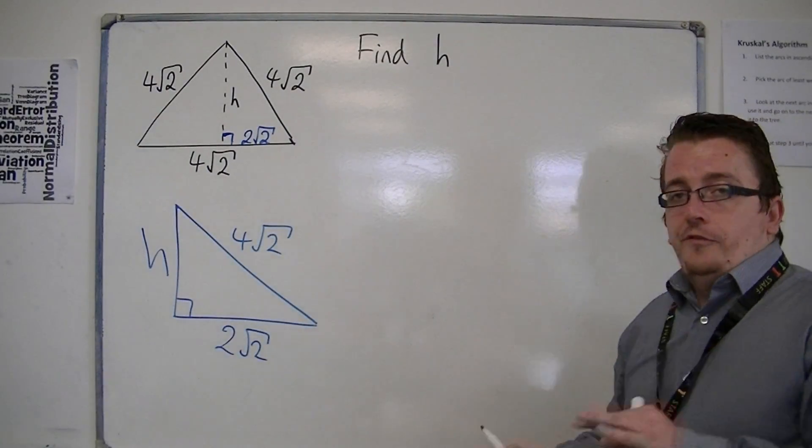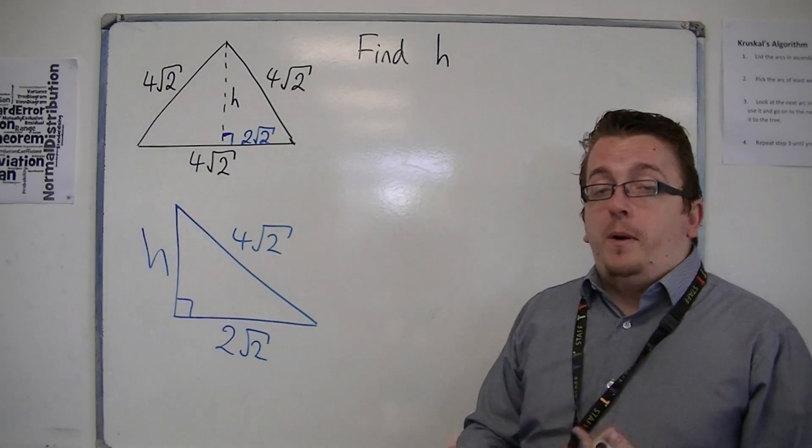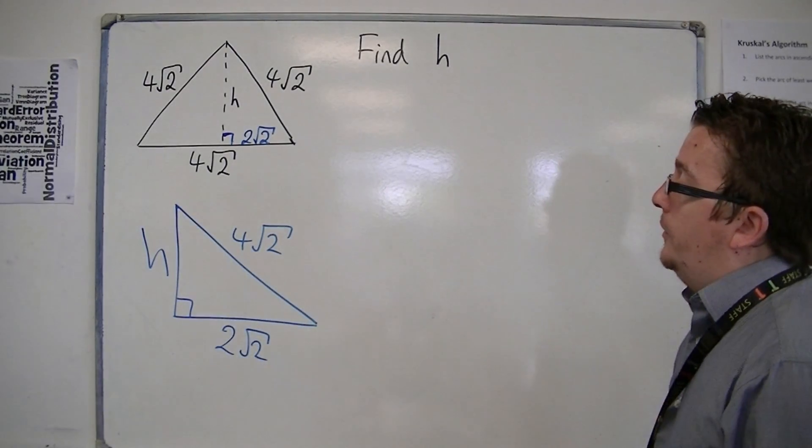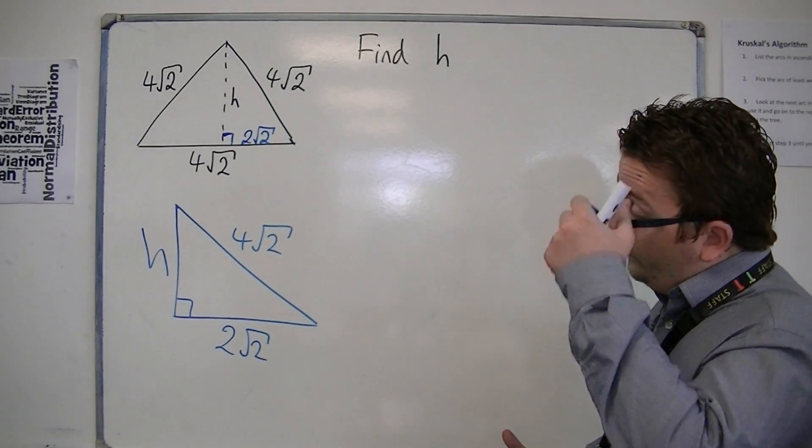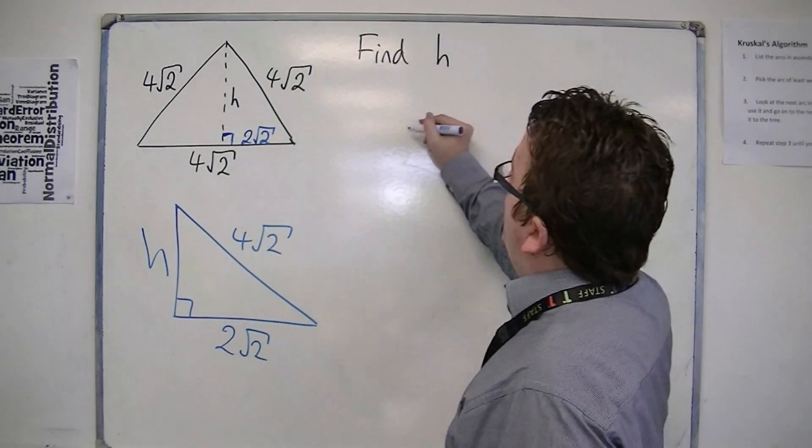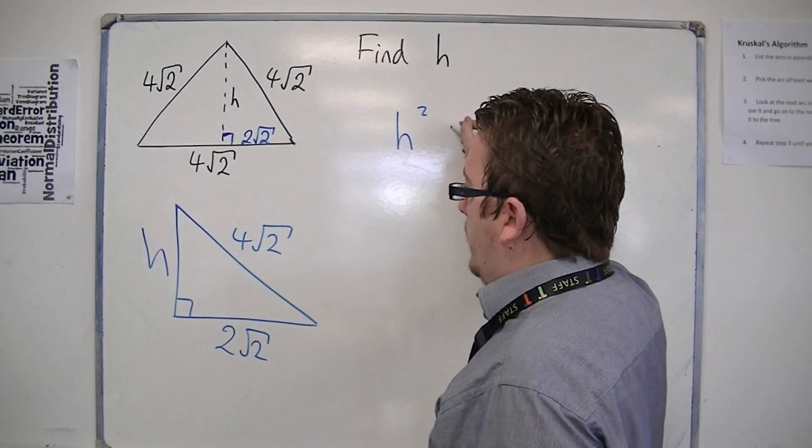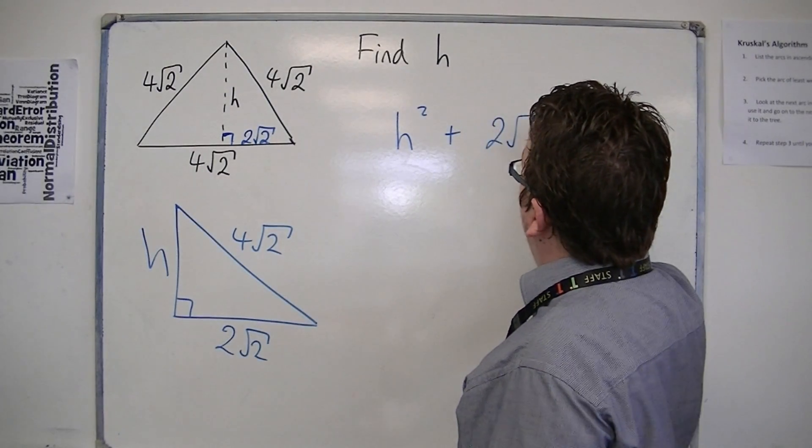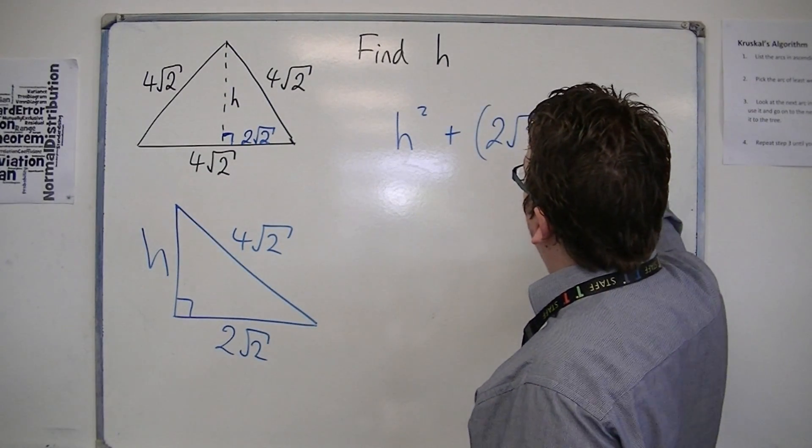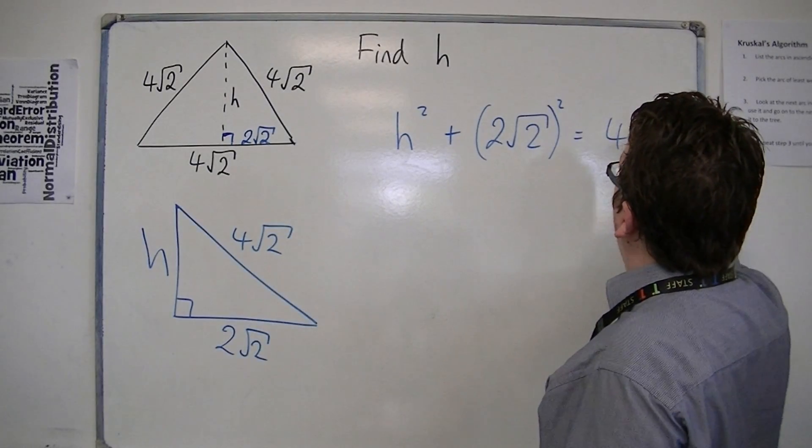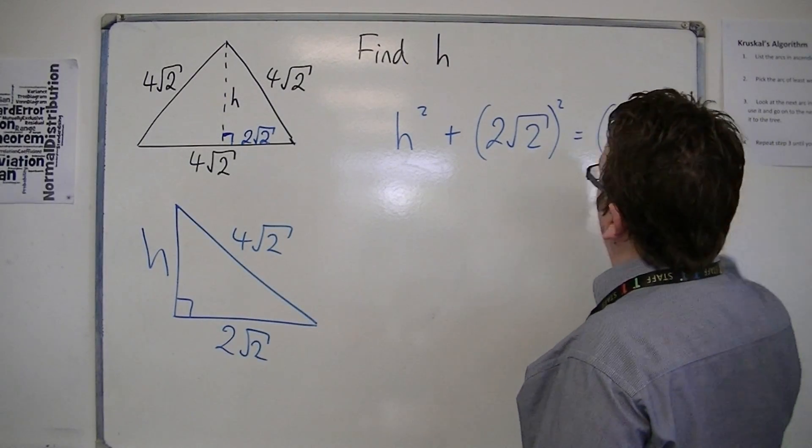So, in order to find h, you're going to have to use Pythagoras' theorem. So a squared plus b squared is c squared. So that would mean that h squared plus 2 root 2 all squared is the same as 4 root 2 all squared.